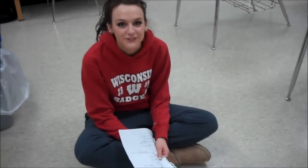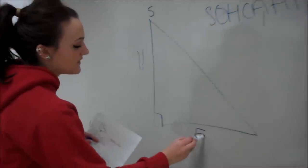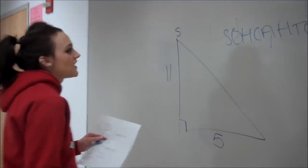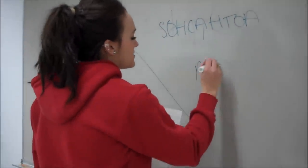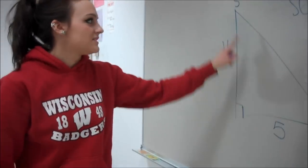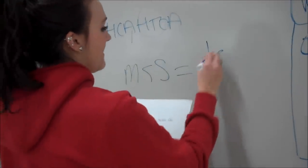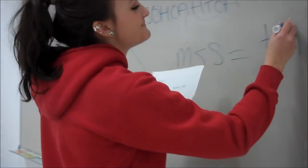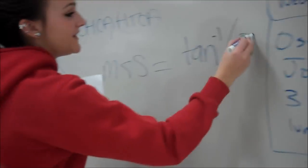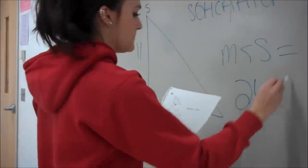Hey, we can use our adventure as a problem for SOHCAHTOA! We started driving eleven miles from the school to the beach, and then we took a detour five miles back to the school. We have to solve for the angle of x. So we're going to write the measure of angle s. Because the detour is opposite the school, and the eleven miles we drove to the beach is adjacent, we use tangent — and we have to use inverse because it's a measure of angle. So it's inverse tangent of five over eleven, which equals 24.44 degrees.